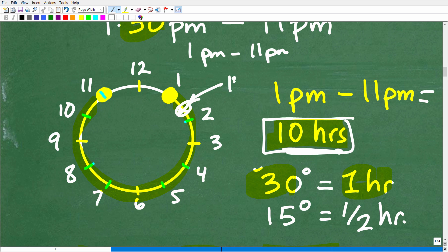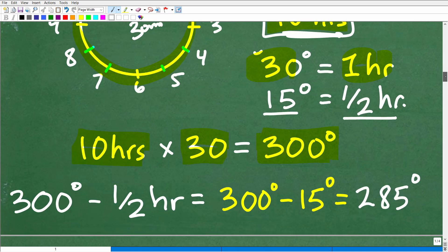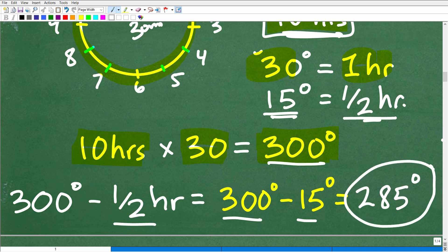So, there's 300 degrees between 1 and 11 PM. But the problem is not starting at 1 PM. It's starting at 1:30 PM, okay? So, we're going to have to take off some of these degrees right here, this little amount, this 30 minutes, right? We didn't start at 1 PM. We started at 1:30 PM. So, we're going to have to subtract away 30 minutes. And 30 minutes is the same thing as a half hour. So, we're going to have to subtract away 15 degrees from our 300 degrees. So, 300 degrees minus 15 degrees gives us 285 degrees.